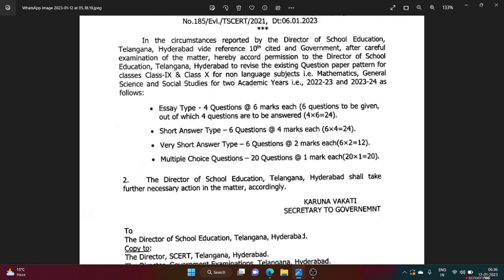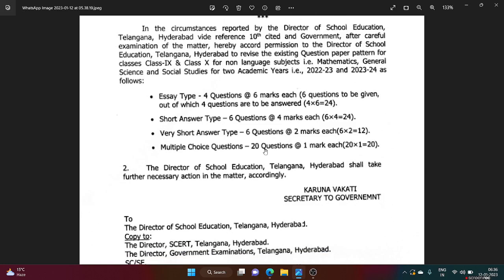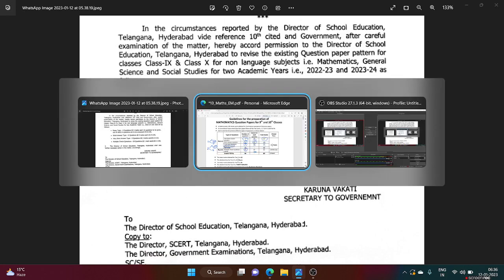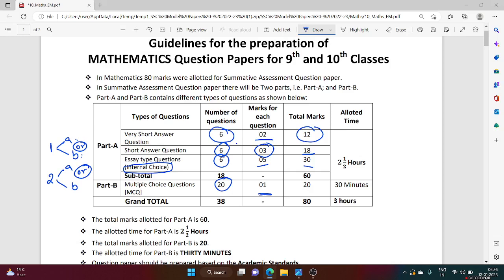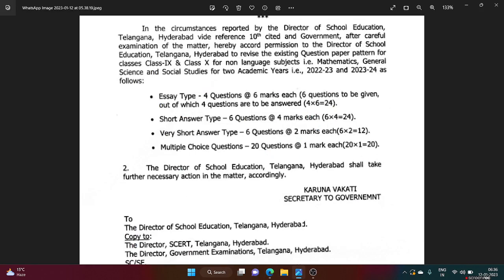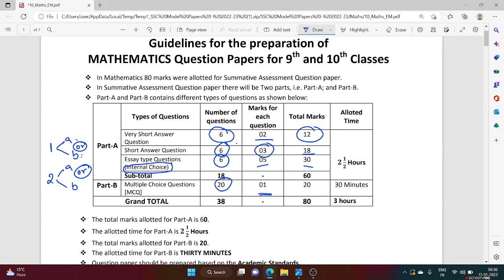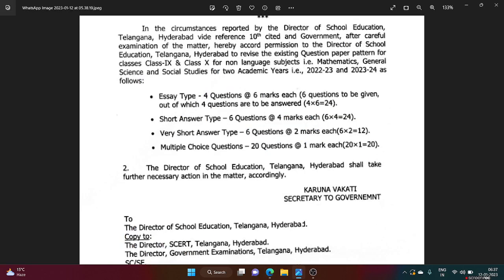People be careful, this is only for Math, Science, and Social. For languages, the pattern will remain the same. Here you see, short answers, earlier also it was six questions, two marks each. Now also it is six questions. Short answers, earlier it is six questions, three marks each, total 18. Now it is six questions, four marks, total 24 marks.